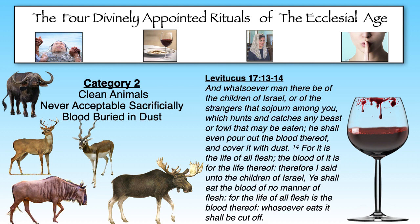We read in Leviticus 17, in the context of the laws of the kingdom of God: 'And whatsoever man there be of the children of Israel, or of the strangers that sojourn among you, which hunts and catches any beast or fowl that may be eaten, he shall even pour out the blood thereof, and cover it with dust, for it is the life of all flesh. The blood of it is for the life thereof. Therefore I said unto the children of Israel, you shall eat the blood of no manner of flesh, for the life of all flesh is in the blood thereof. Whoever eats it shall be cut off.'